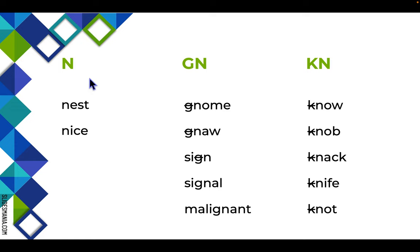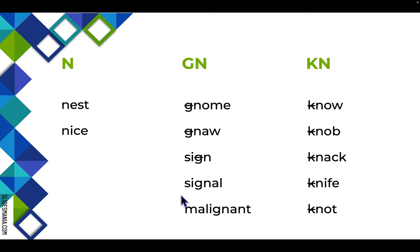N says /n/ like in 'nest' and 'nice.' If you have a G and an N together, the G is often silent, like in 'gnome,' 'gnaw,' or 'sign.' However, if you start adding Latin suffixes to the word, the G says /g/ again, like in 'signal' or 'malignant.'